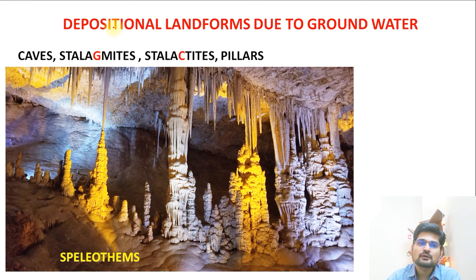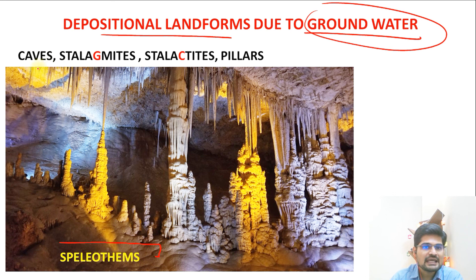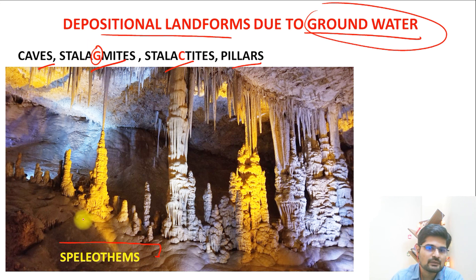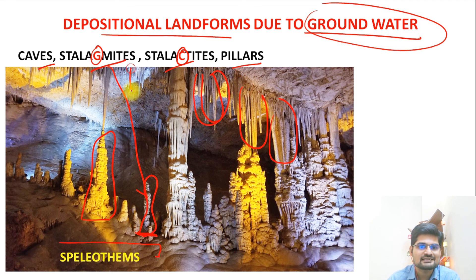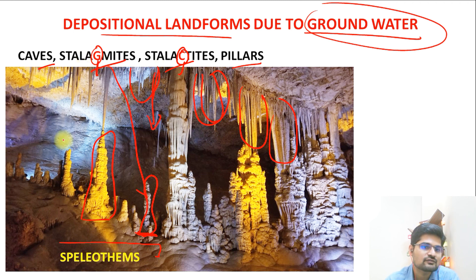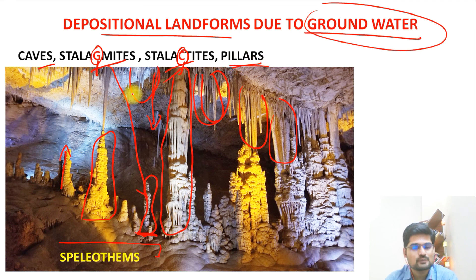The last depositional landforms result from underground water action — these are called speleothems, which include caves, stalagmites, stalactites, and pillars. A helpful mnemonic: stalactite has a 'C' for ceiling — it hangs down from above; stalagmite has a 'G' for ground — it grows upward from the floor. When a stalactite and stalagmite meet, they form a pillar.